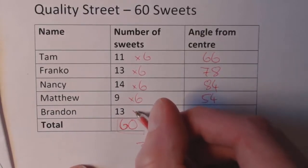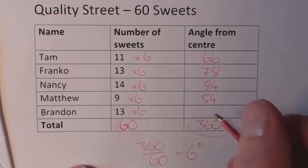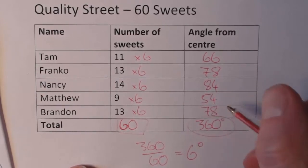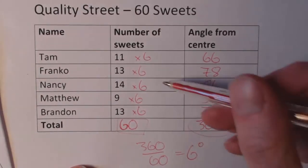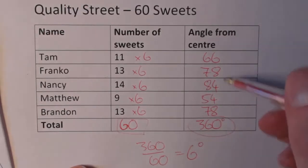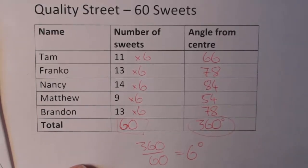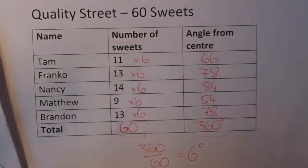Matthew, he got 54, and Brandon got the same as Franko and that is 78. You know it's correct as well, that added up to 60, or this has to add up to 360. If it doesn't you have a problem.